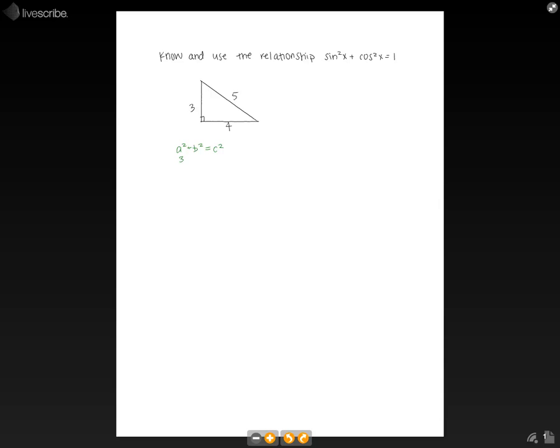So we know that 3 squared plus 4 squared equals 5 squared, and 9 plus 16 equals 25, so 25 equals 25. The Pythagorean Theorem obviously works in this case.